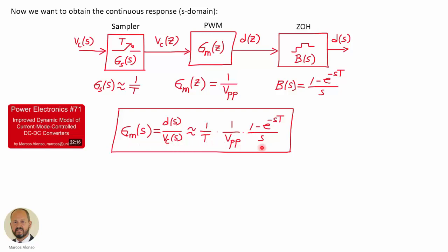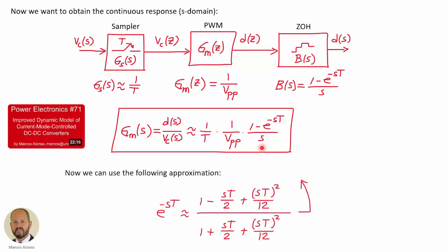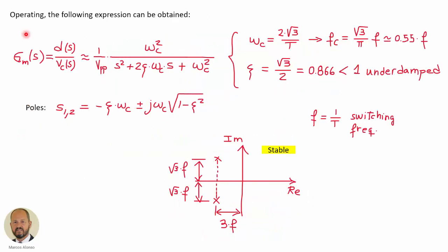We have the product of the three gains, and as done in the previous video, we use the approximation for e^(-sT) shown here. Substituting this value into the equation, we obtain the final response of the modulator considering the sampling behavior, and by operating we get this final transfer function of the modulator.